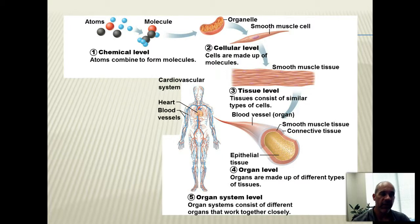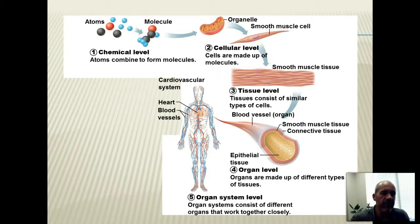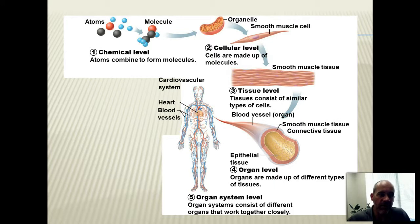Organs function together and cooperate with each other to form organ systems — that'll be the subject of your next video clip in Unit 1. An organ system like the cardiovascular system, shown here in the diagram, consists of a heart (one organ), and all of the arteries in red and veins in blue are also organs themselves. When you put all of those blood vessels together with the heart, you now have an organ system with a very specific job: circulating blood throughout the body.